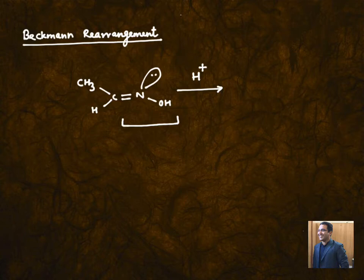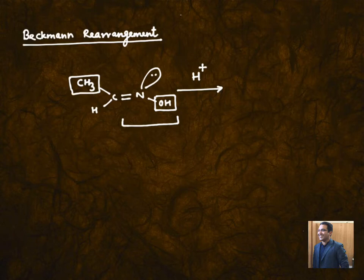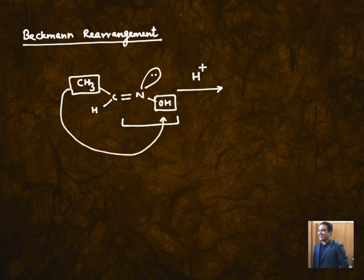You can observe this C double bond NOH group that is indicating a presence for oxime. Now, if you observe it carefully, you can say that OH here and this CH3, they are opposite to each other. Since they are opposite to each other, with respect to CH3, it is placed in anti-position. Whereas, with respect to hydrogen, it is syn-position.